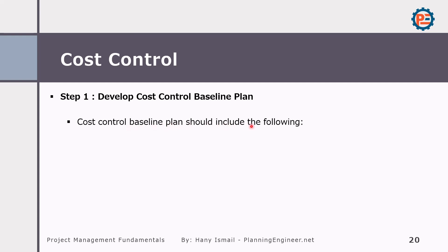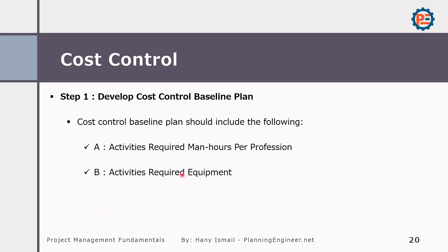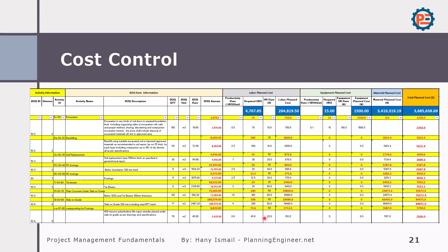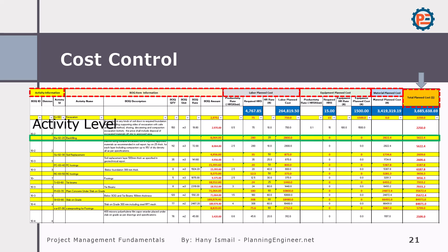The cost control baseline plan should include: the required man-hours per profession for each activity, equipment hours required, and materials needed. Here is a sample cost control sheet showing activity information, the BOQ item, labor planned cost, equipment planned cost, material planned cost, and finally the total planned cost — organized at both the activity level and BOQ item level.